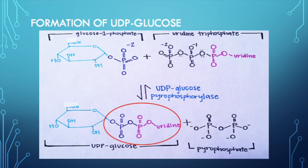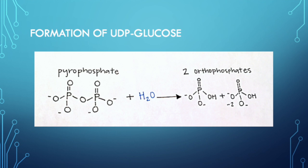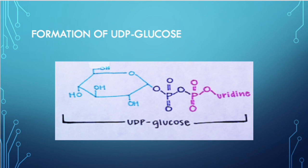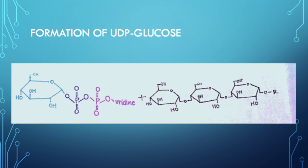UDP-glucose is more reactive than glucose-1-phosphate due to the overall negative charge. The inorganic pyrophosphate reacts with water to produce two orthophosphates, which is crucial in driving the overall reaction towards the products. We are now able to use the UDP-glucose form to add glucose to the glycogen chain.